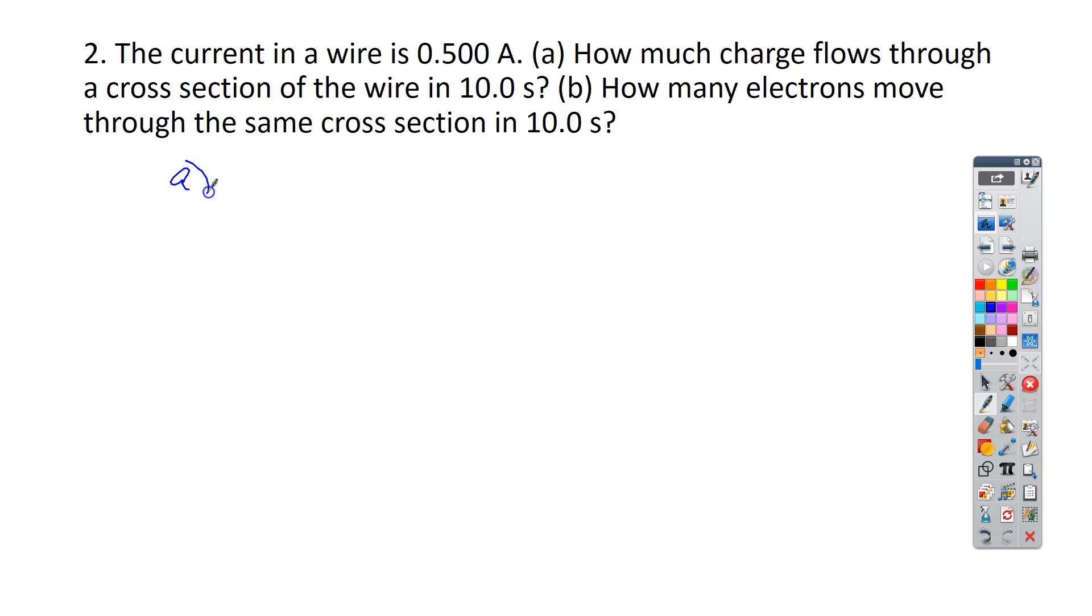So the first thing they want us to do is try to figure out charge. So remember Q is equal to I delta T. This is equal to 0.5 amps times our time, which is 10 seconds. Remember this is a coulomb per second, so the seconds cross off and we're left with coulombs, which is what we want. And so this is going to be 5 coulombs of charge.